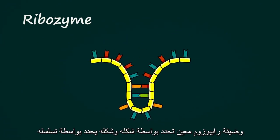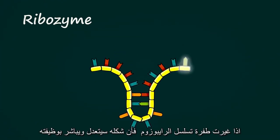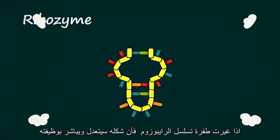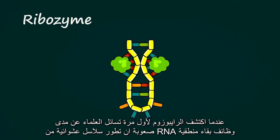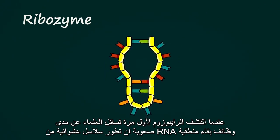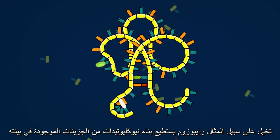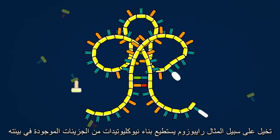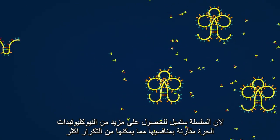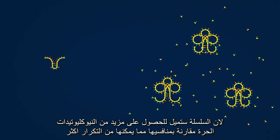A ribozyme's specific function is determined by its specific shape, and its shape is determined by its sequence. If a mutation changes a ribozyme's sequence, the shape can be modified, and so can its function. When ribozymes were first discovered, scientists wondered how difficult it would be for random chains of RNA to evolve legitimate survival functions. Imagine, for example, a ribozyme that could build nucleotides out of molecules it finds in its environment. Across multiple generations, natural selection could promote and refine this ribozyme because the chain would tend to have access to more free nucleotides than its rivals, allowing it to replicate more often.